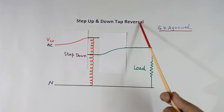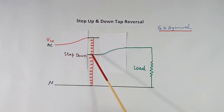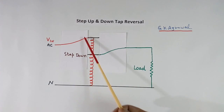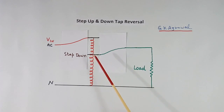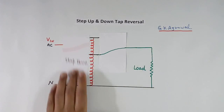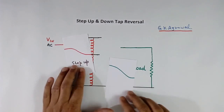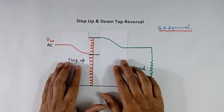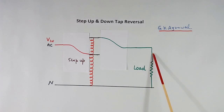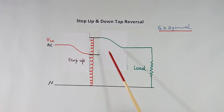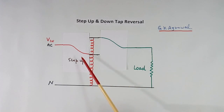Step up and down tap reversal. In this auto transformer there are two tappings. Higher turns are connected to input and lower turns connected to output, so turns at output are less — the voltage will be less, making it a step down configuration. Now the same transformer can be connected as a step up. Input is connected to the lower turns tap and the output load is connected to the higher turns tap, so it is a step up transformer — you will get more voltage. This change or reversal is done using switches, and by this method the cost of the transformer can be reduced.